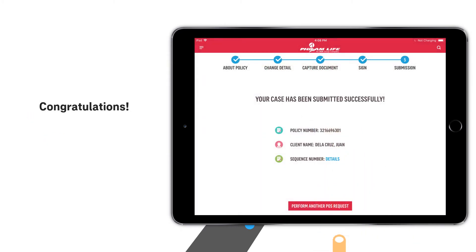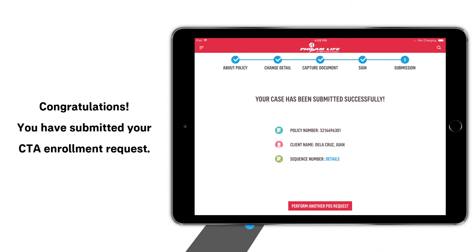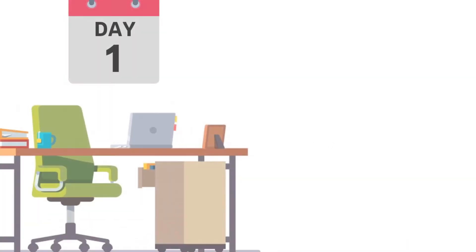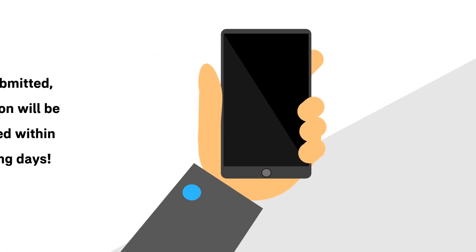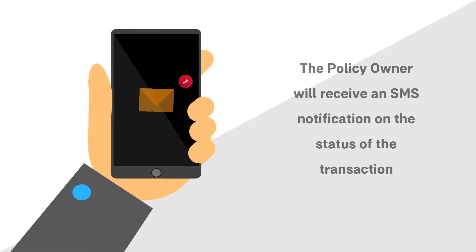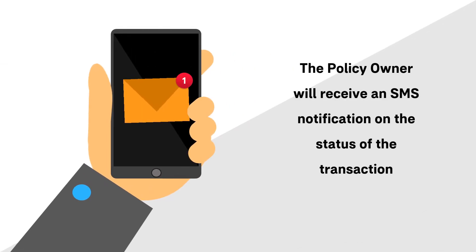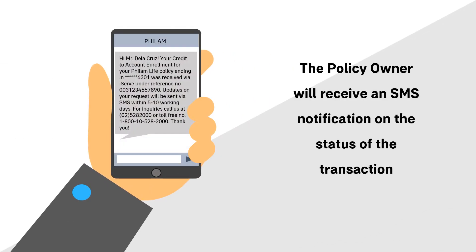Congratulations! You have successfully submitted your credit to account enrollment request. After the submission, this will be processed within 5 working days. The policy owner will also receive an SMS notification on the status of the transaction.